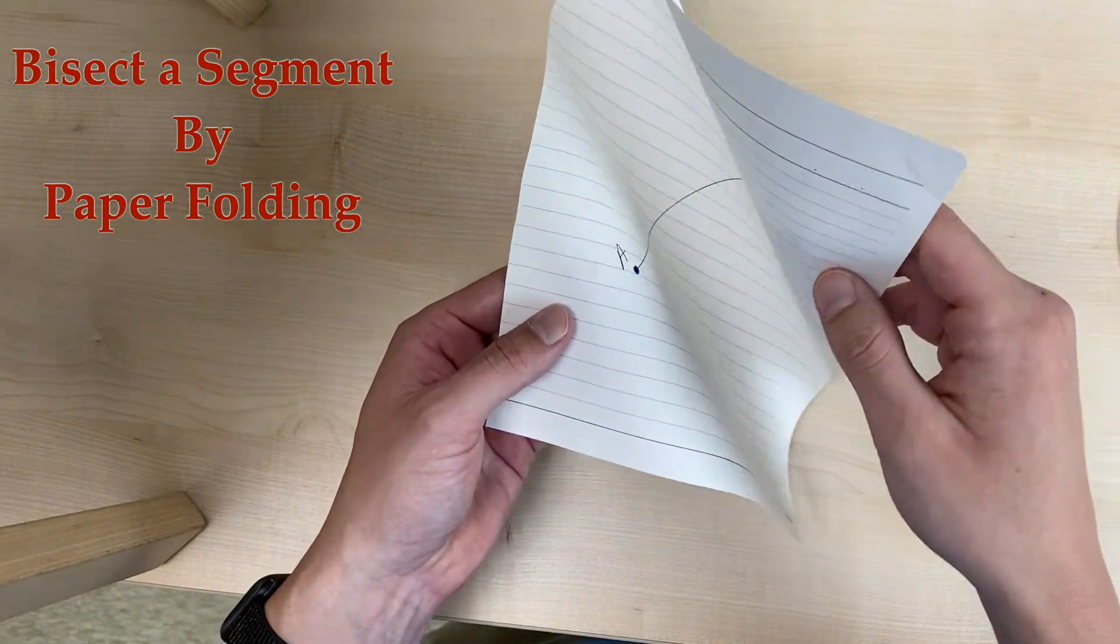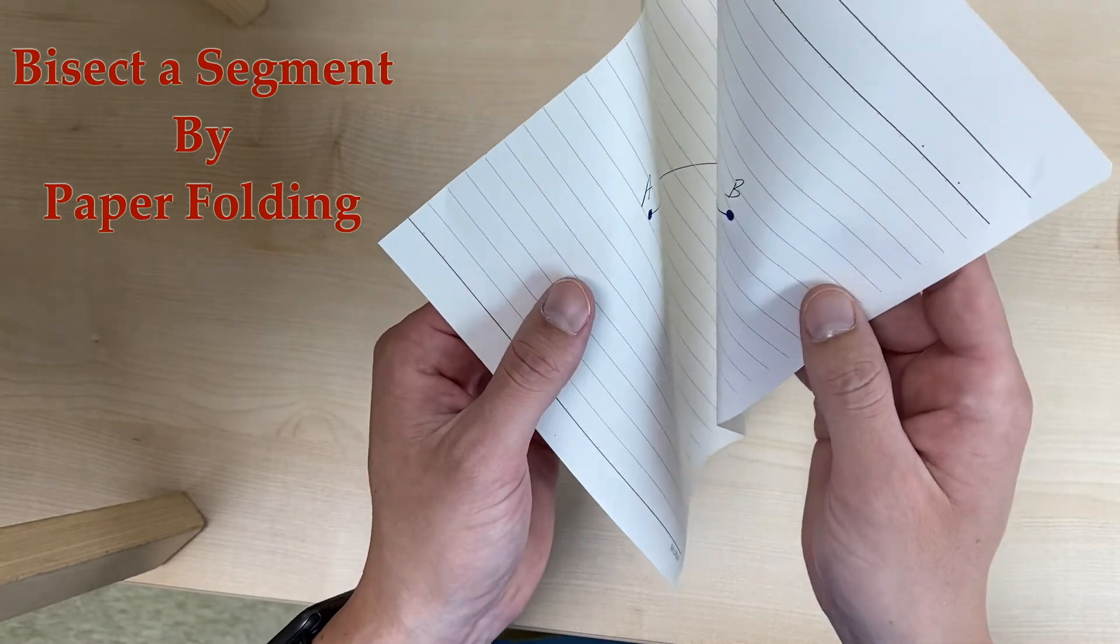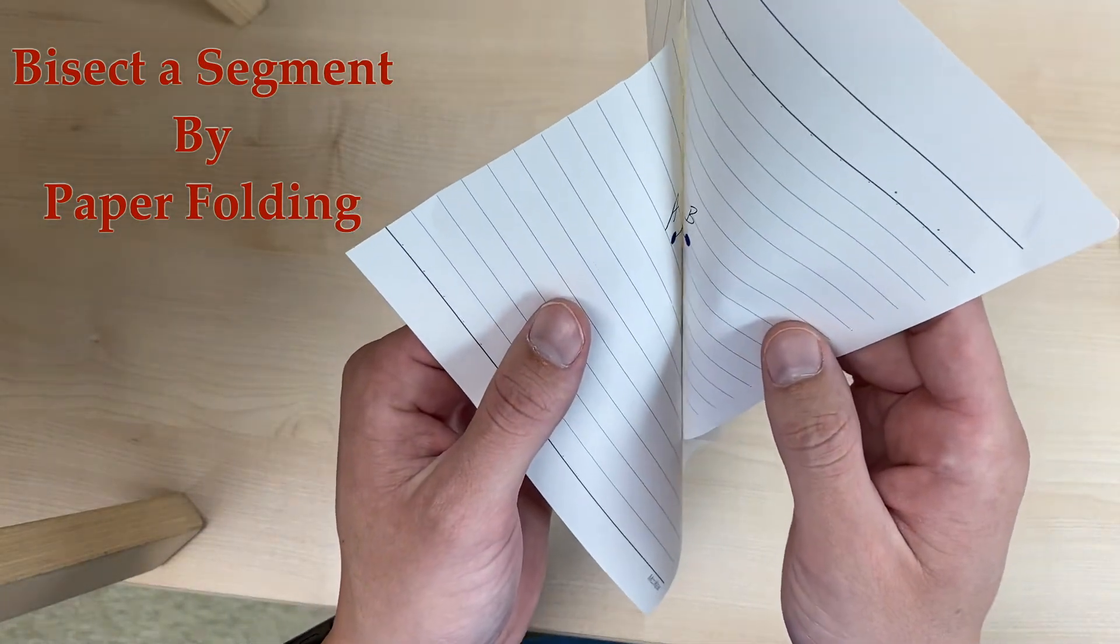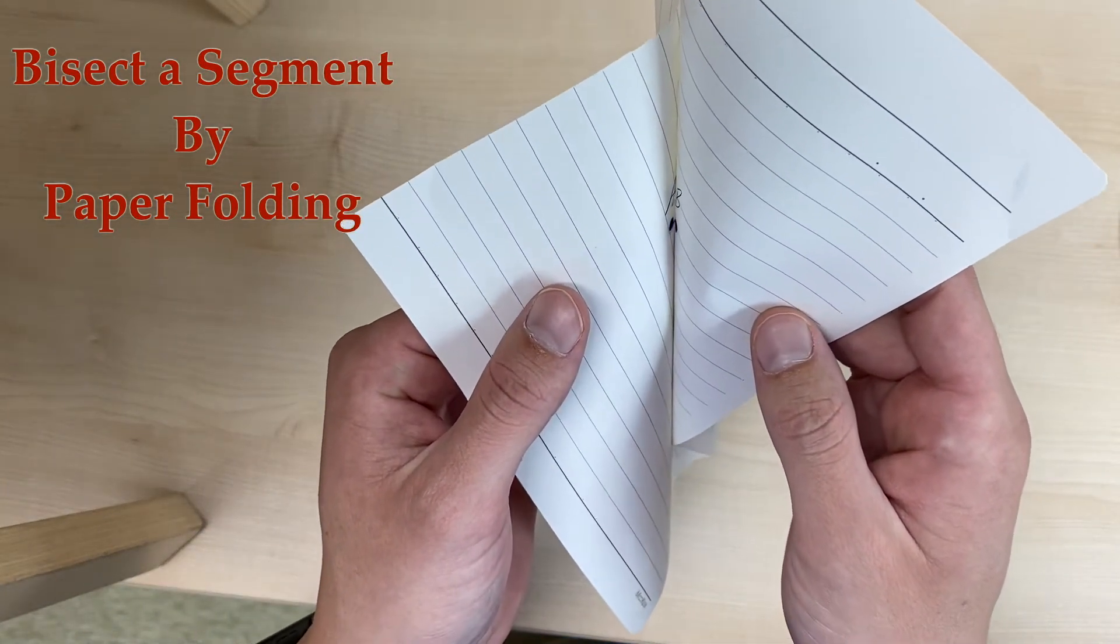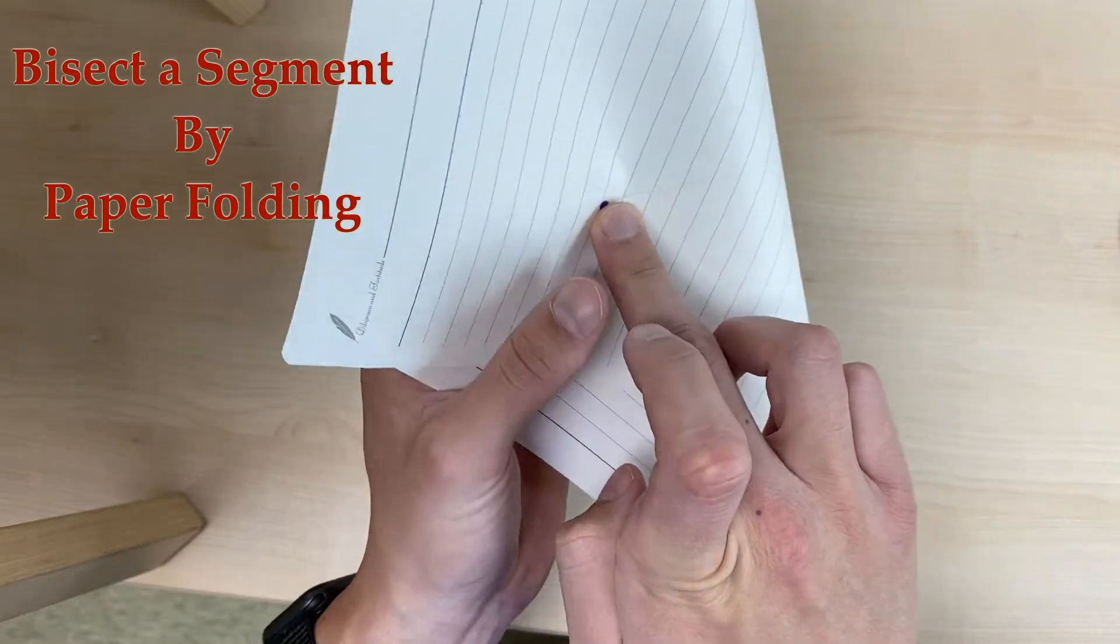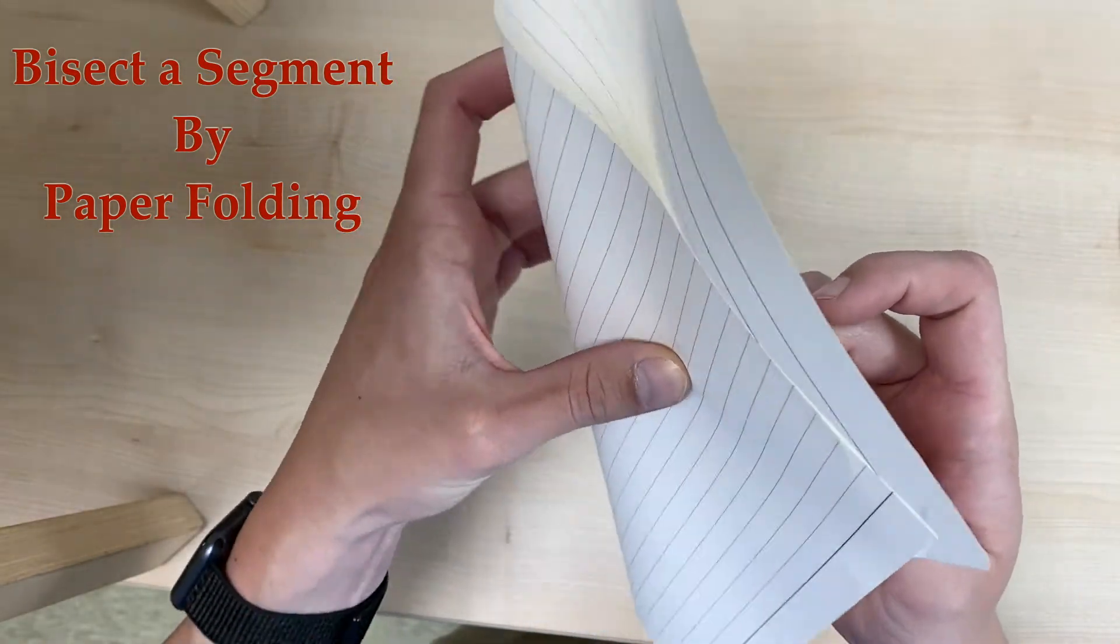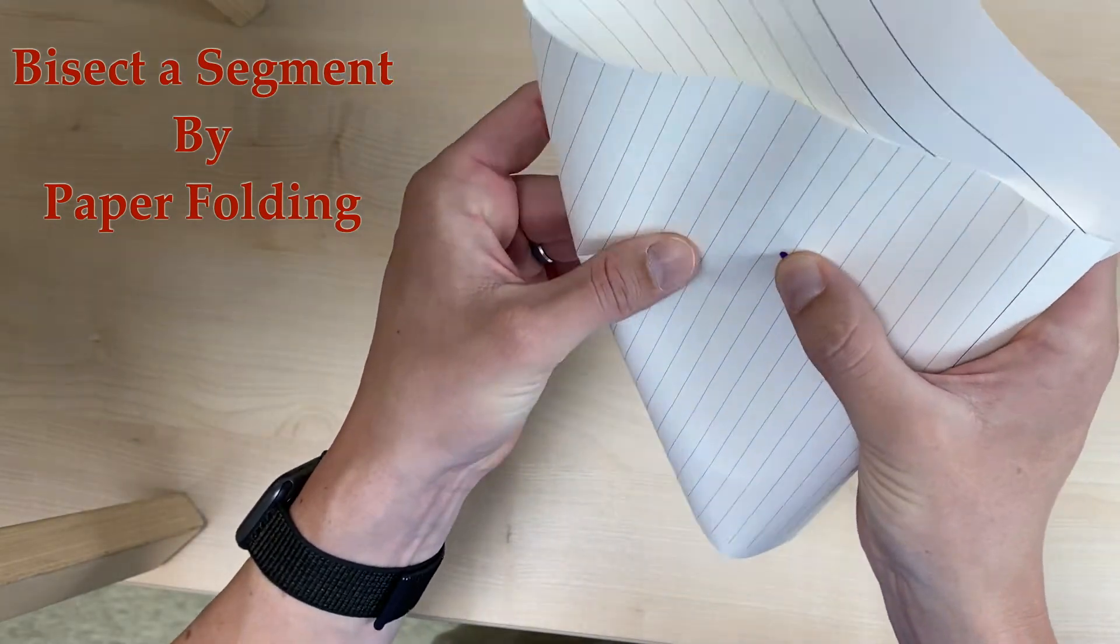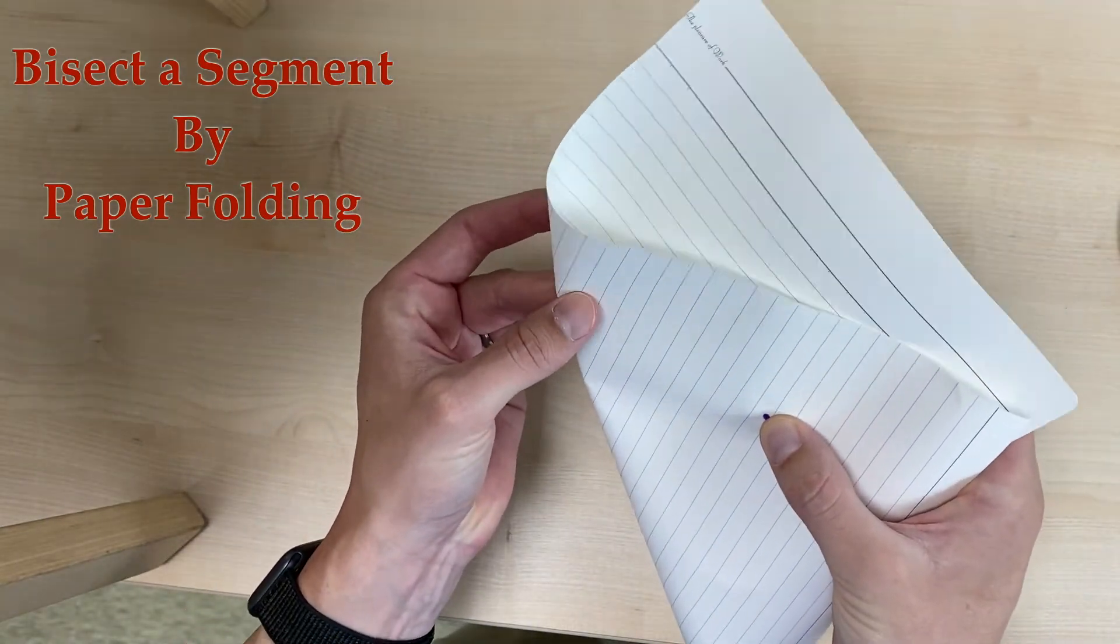So we're going to take our paper and we're going to fold our paper so that these two points line on top of each other, just like this. And just hold it there, create your crease in your paper like this.